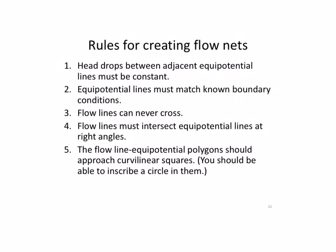When creating a flow net, several rules must be followed. Head drops between adjacent equipotential lines must be constant, since there is a single value of potential drop across the whole flow net. Equipotential lines must match known boundary conditions. Flow lines can never cross. Flow lines must intersect equipotential lines at right angles. And the polygons formed between flow lines and equipotentials should approach curvilinear squares, meaning you should be able to roughly inscribe a circle within them.